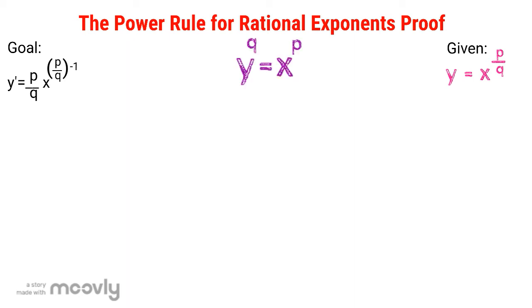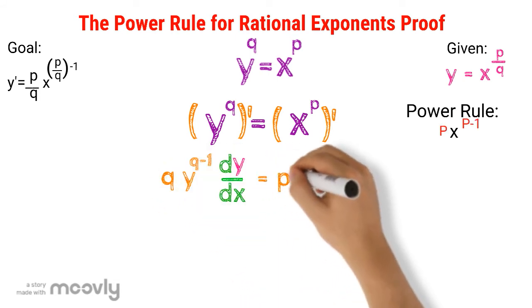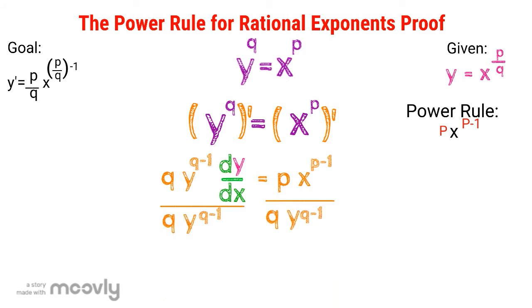Let's continue with our equation. I'm going to take the derivative on each side. That's going to give us q y to the power of q minus 1, dy dx equals p x to the power of p minus 1. Now we want dy dx to be by itself. So let's go ahead and divide each side by q y to the power of q minus 1.